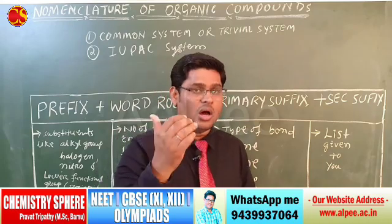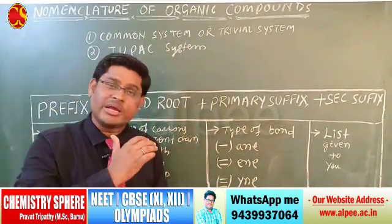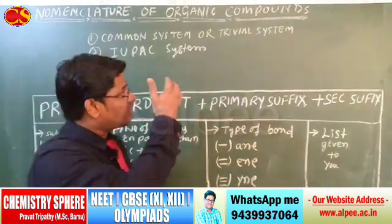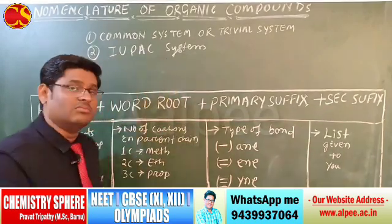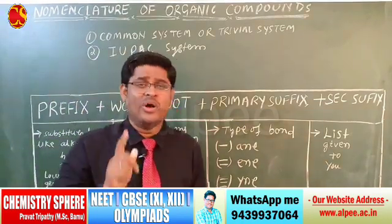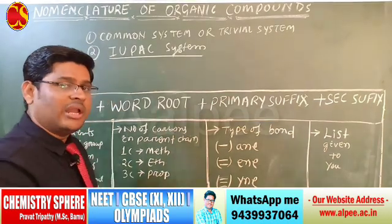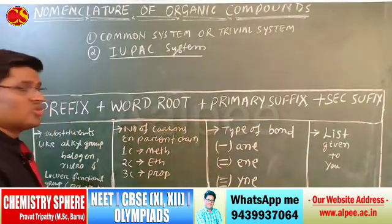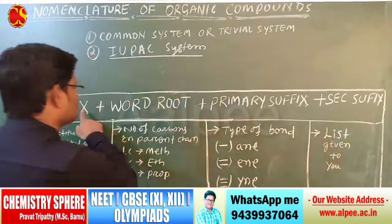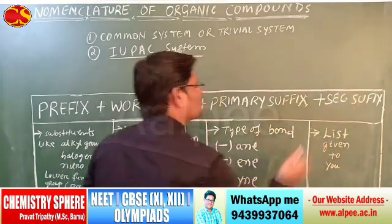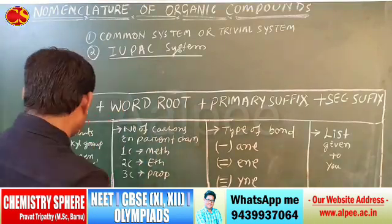To summarize: in the trivial or common system, organic compounds are named based on their source or origin. The latest system is IUPAC — International Union of Pure and Applied Chemistry. According to the IUPAC system, we can name organic compounds using the formula: prefix + word root + primary suffix + secondary suffix. This is the basic skeletal formula, and by using it we can name organic compounds.